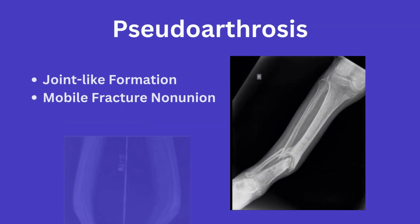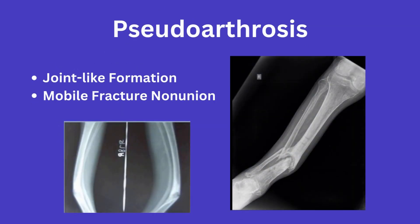Lastly, there is pseudoarthrosis. This refers to when a fracture forms a joint-like formation where there was not a joint previously — a false joint, if you will. You can see an example here; in this example, there appears to be a joint-like pattern in the diaphysis of the tibia. These are fixed with a surgery to remove the non-viable ends and application of fixation for stability.